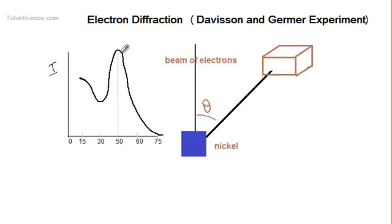Now, Davison and Germer thought that there is some similarity between the results that they have got over here and the X-ray diffraction experiments that had been done earlier. From this, they concluded that the electron beam was being diffracted and this was a direct experimental evidence of de Broglie's wave hypothesis.